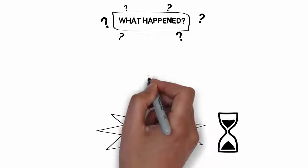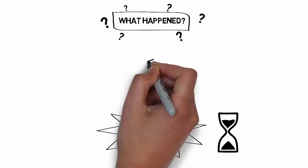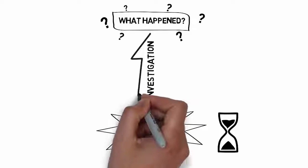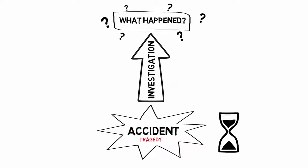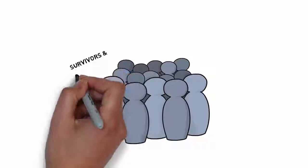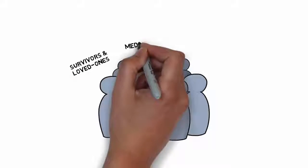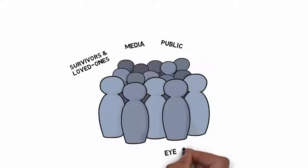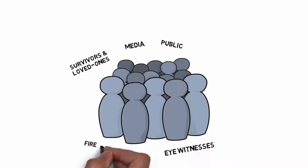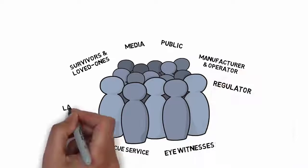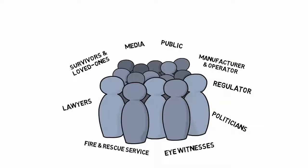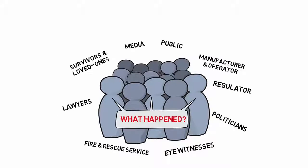The past has shown us that the most effective way to get to the answers is through an investigation. However there is a complication. If we start to look at all those different people that are directly or indirectly affected by an accident, it appears on the surface that they all have the same motive — they all want to get to the bottom of what happened.